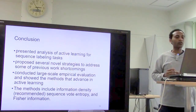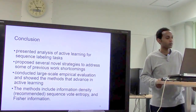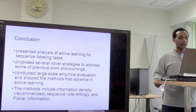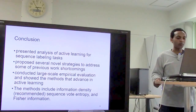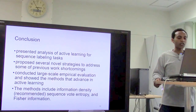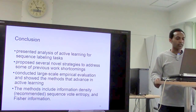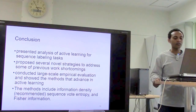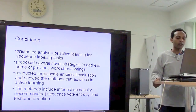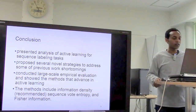In conclusion, the authors presented an analysis of active learning for sequence labeling tasks, proposed several novel strategies addressing previous work's shortcomings, and conducted a large-scale evaluation showing advancements in active learning. Their recommended methods include information density as the best strategy for selecting the most informative data points, combined with sequence entropy, least confidence, or sequence vote entropy as the base informativeness measure. Thank you very much.